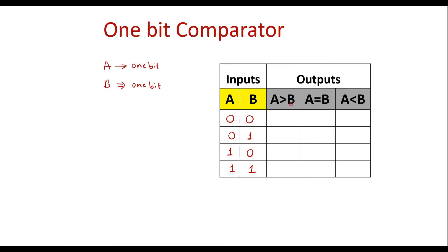Now let us look at the truth table. For a=0 and b=0, both values are the same so a is equal to b — that is 0 equals 0. The comparator will make the a-equal-to-b line high and the rest two lines as 0. For a=0 and b=1, a is less than b, so the comparator will make the a-less-than-b output high and the other two outputs low.